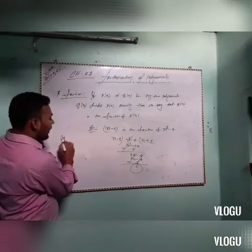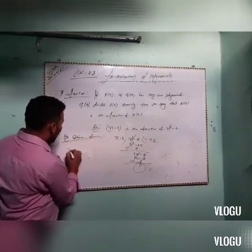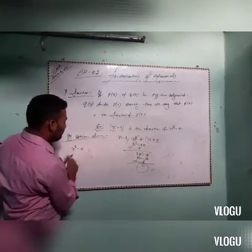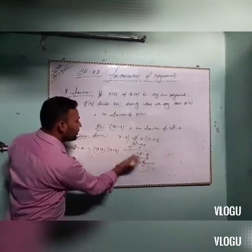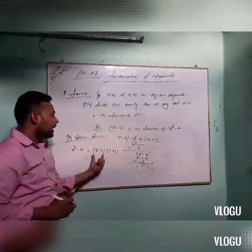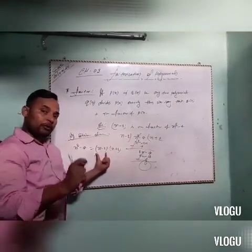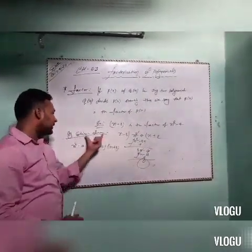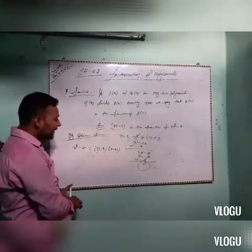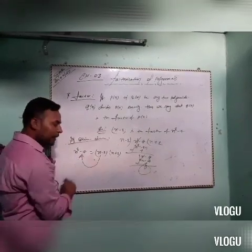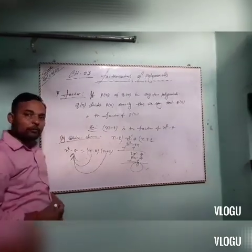By the division algorithm theorem, x squared minus 4 equals x minus 2 into x plus 2, with remainder 0. The dividend equals divisor multiplied by quotient plus remainder. So by the division algorithm theorem, x squared minus 4 equals x minus 2 into x plus 2. We say that x minus 2 is a factor of x squared minus 4, and x plus 2 is also a factor of x squared minus 4.